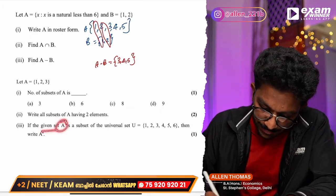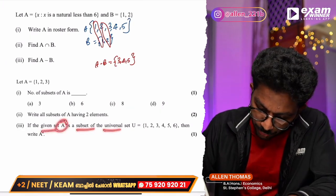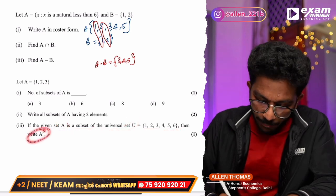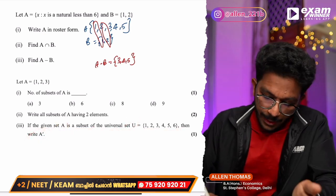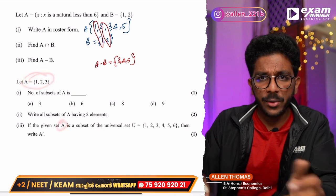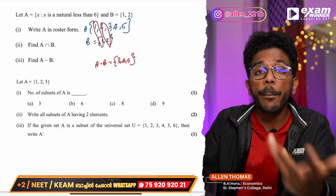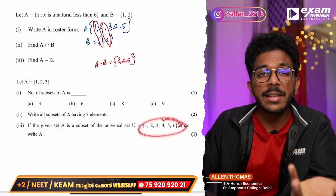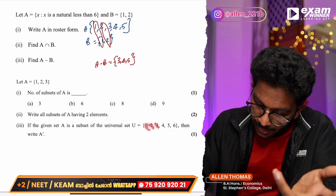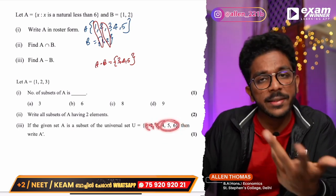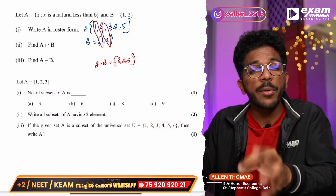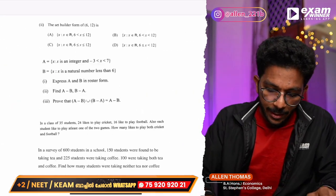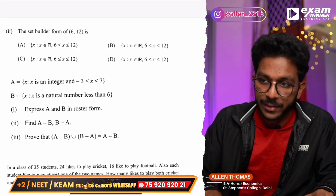If the given set A is a subset of the universal set U = {1, 2, 3, 4, 5, 6}, then A complement: basically the universal set is {1,2,3,4,5,6}. A = {1,2,3}, so A complement = {4, 5, 6}. Then we will go to the next set of questions.